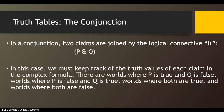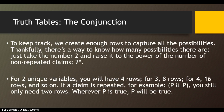In a conjunction, two claims are joined by the logical connective AND. In this case, we'll use the ampersand for P and Q. We must keep track of the truth values of each claim in a complex formula. So there are worlds where P is true and Q is false, worlds where P is false and Q is true, worlds where both are true, and worlds where both are false. To keep track, we create enough worlds — rows — to capture all the possibilities. There's a way to know how many possibilities there are: just take the number 2 and raise it to the power of the number of non-repeated claims.